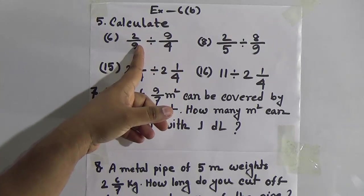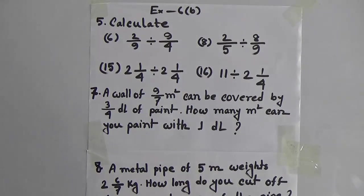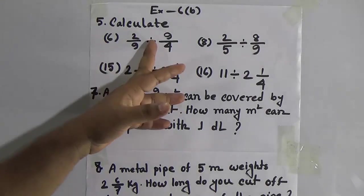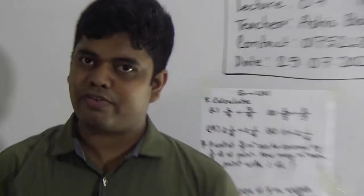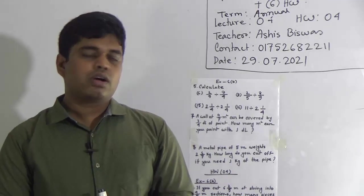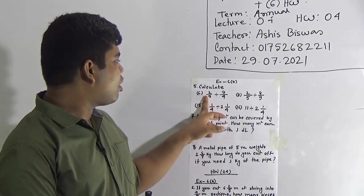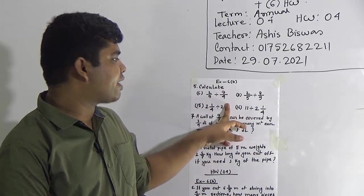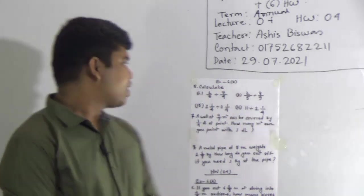Let us start to solve. Here we calculate 2/9 divided by 9/4. Before starting the division of two fractions, we need to know what division of one fraction by another fraction means. Division of one fraction by another fraction means multiplication of the first fraction with the reverse of the second fraction.